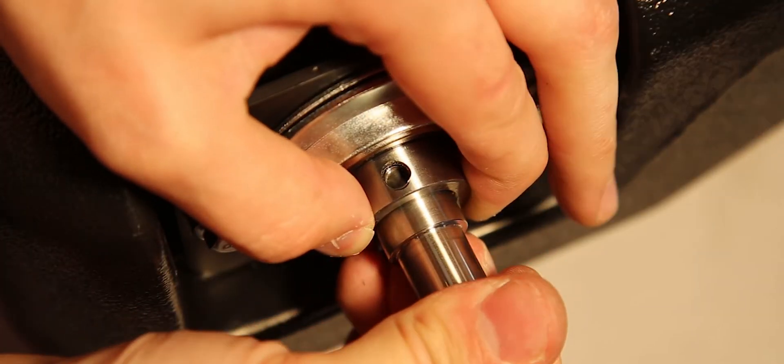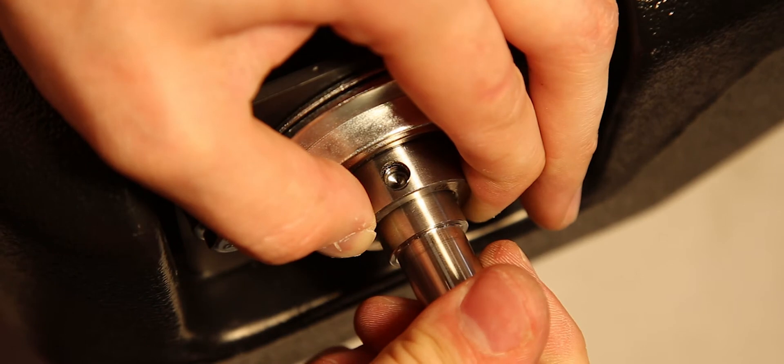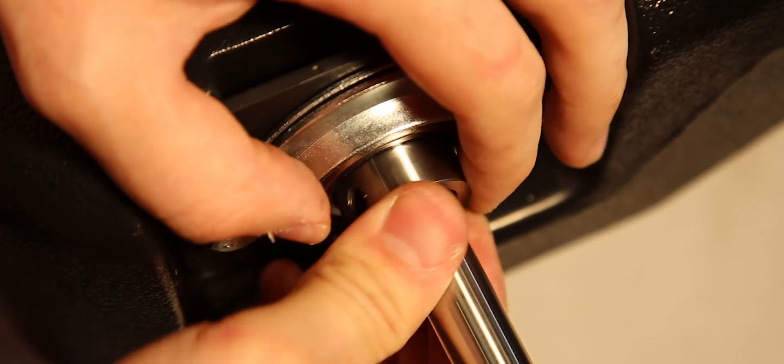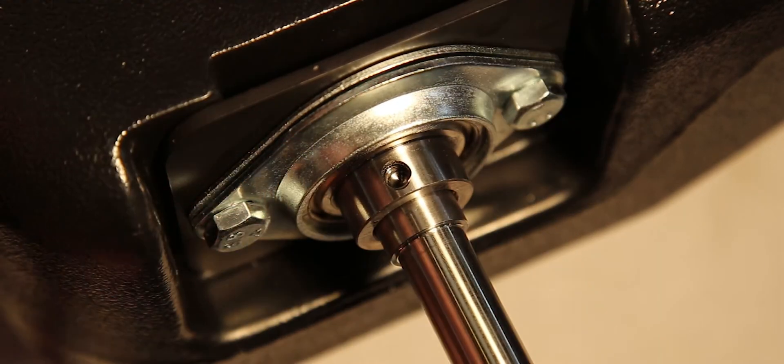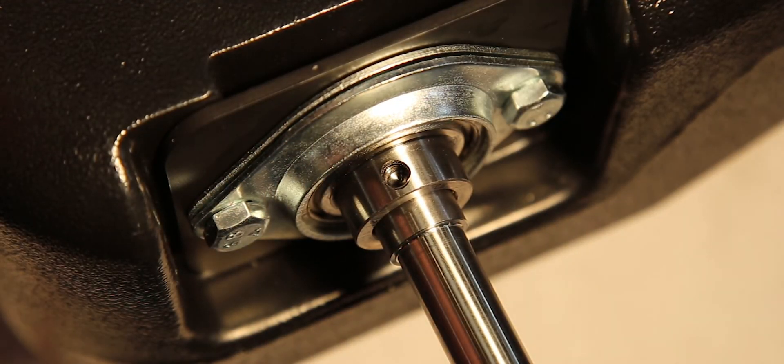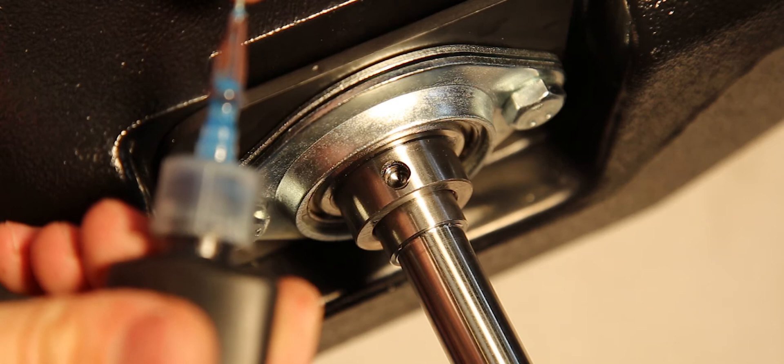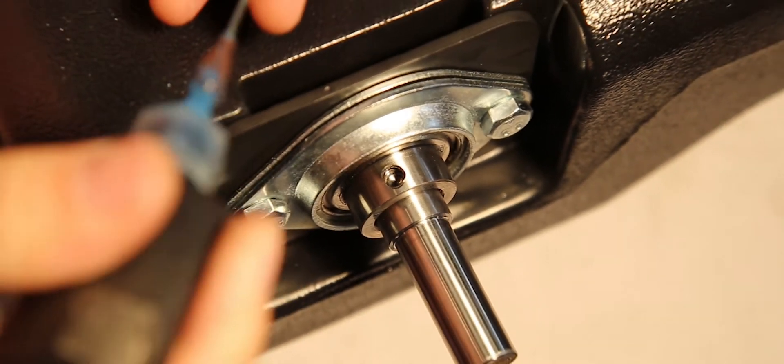Align the two dimples with the two threads in the flange bearing outside of the encoder cavity. Apply a drop of blue Loctite to each of the two set screws and fasten them.